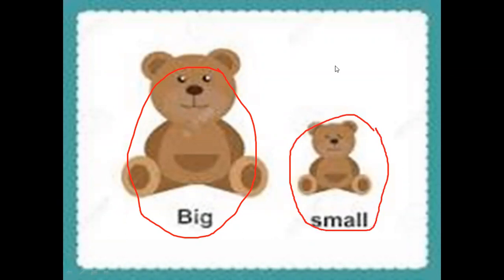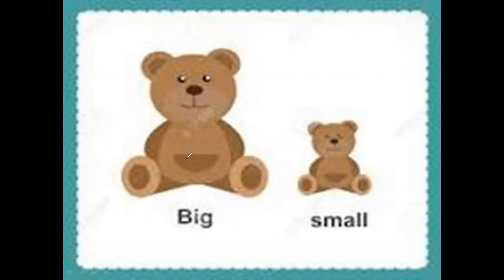On our left side we have 'big' and on our right side we have 'small.' 'Big' means a lot, more than average in quantity, and 'small' is less than average quantity.